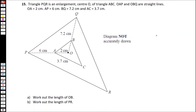The last question involves triangle PQR with center O. Triangle PQR is an enlargement centered at O of triangle ABC. They want us to find the length of OB. The smaller triangle has been enlarged to the bigger triangle with center of enlargement O, which means the two triangles are similar.